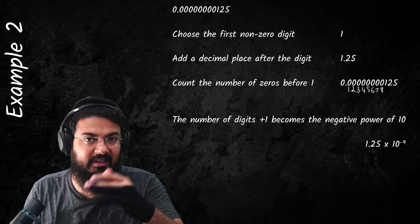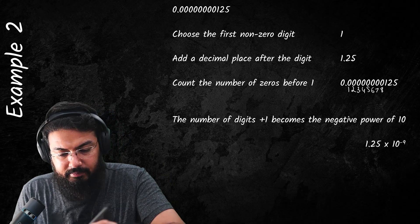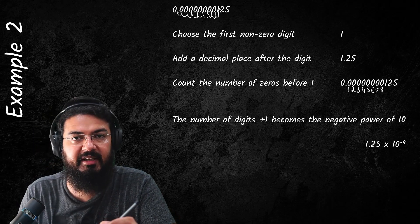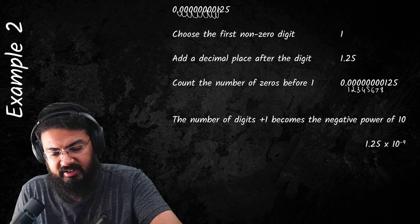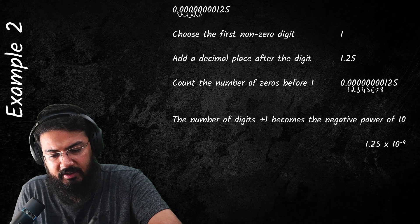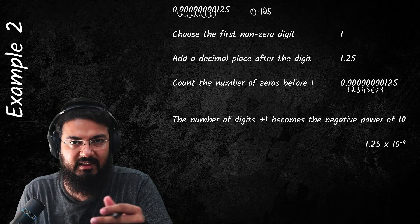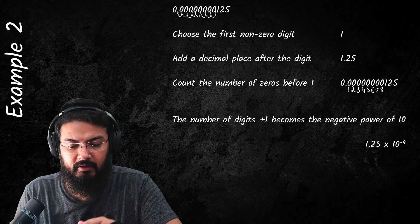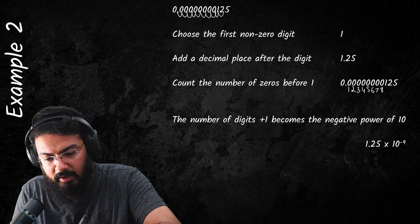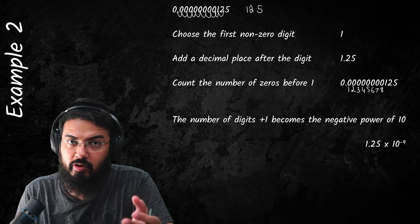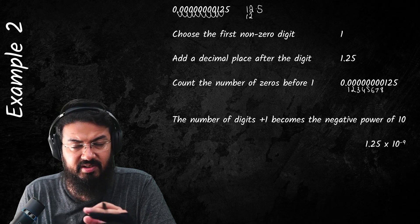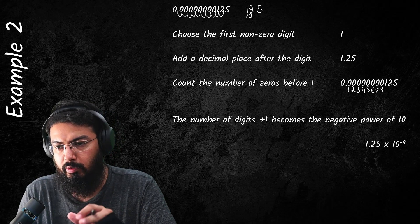Using the decimal movement method: count how many places to move right to get 1.25 — that's 1, 2, 3, 4, 5, 6, 7, 8, and 9. Moving only 8 places gives 0.125, which is not allowed because zero cannot be the units digit. Moving 10 places instead gives 12.5, which is also not acceptable because you'd have two digits to the left of the decimal place.